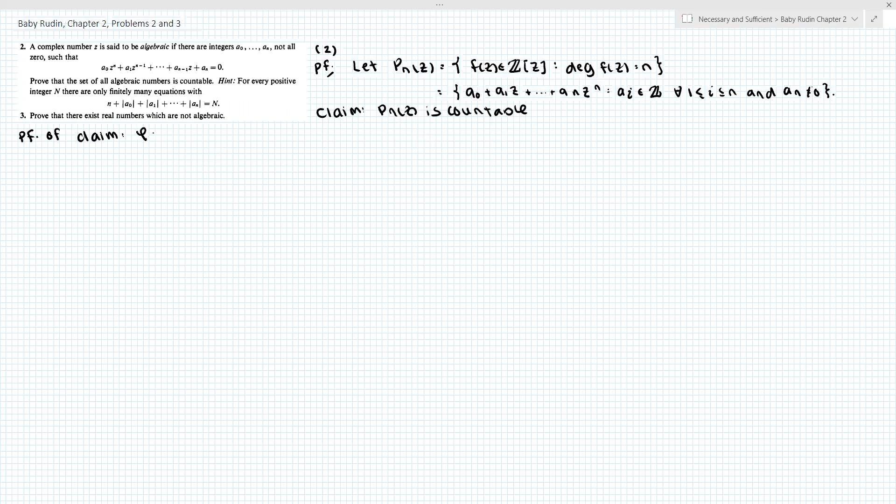Consider the function phi which maps from P sub n of z to Z to the n plus 1, so n plus 1 tuple of Z. We'll say phi such that phi of a_0 plus a_1 z plus dot dot dot a_n z to the n is equal to the tuple a_0, a_1 through a_n.